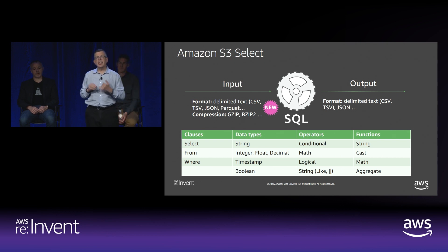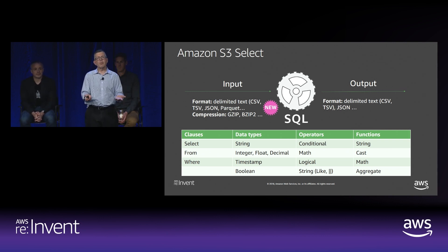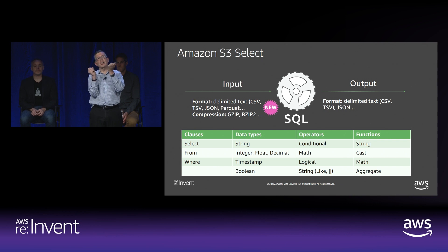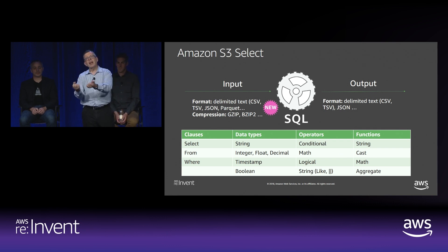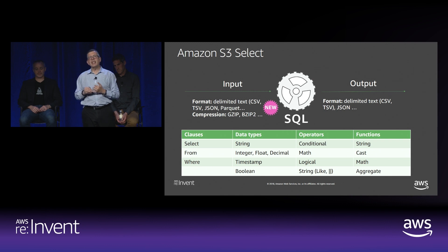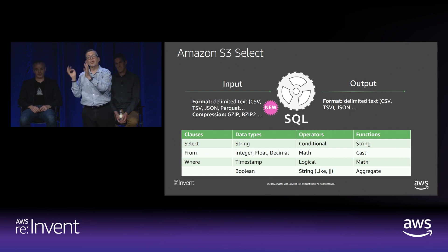What S3 Select and Glacier Select enable is this: what if you could intelligently have the storage layer, based on things like SQL expressions, do the scanning and filtering of data in the storage layer where the data lives, and only return the results that are relevant to those SQL scans? So you could start to do things like, rather than do a get object, have a pushdown where you could issue a SQL statement — for example, from this object, with SQL conditionals saying you only want data from a specific IP address or range of IP addresses. S3 will perform that scan and only return the results that are actually needed.